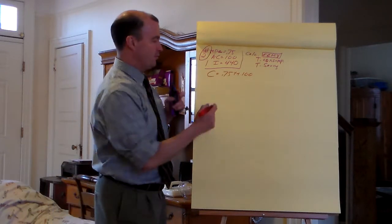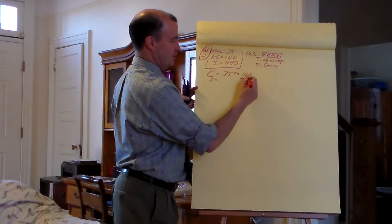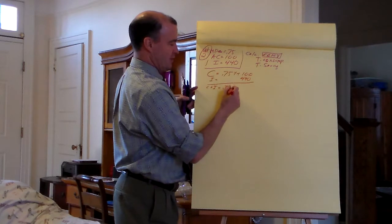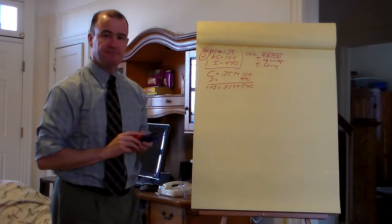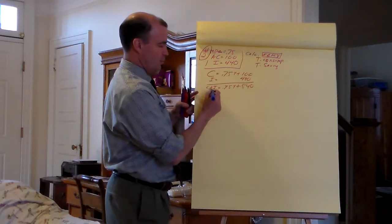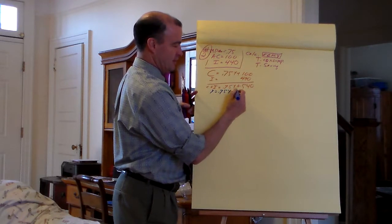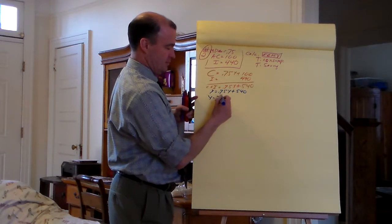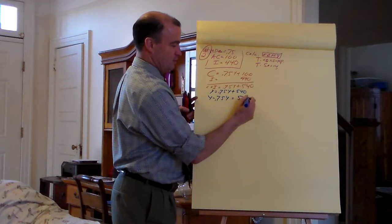We would have done this the day before. I equals 440, so we get C plus I equals 0.75Y plus 540. Y equals 0.75Y plus 540. Bring the Y's together — they're all on the left side, 540 is on the right side.